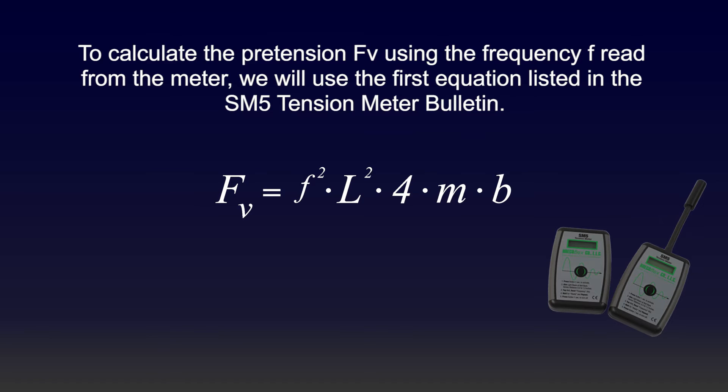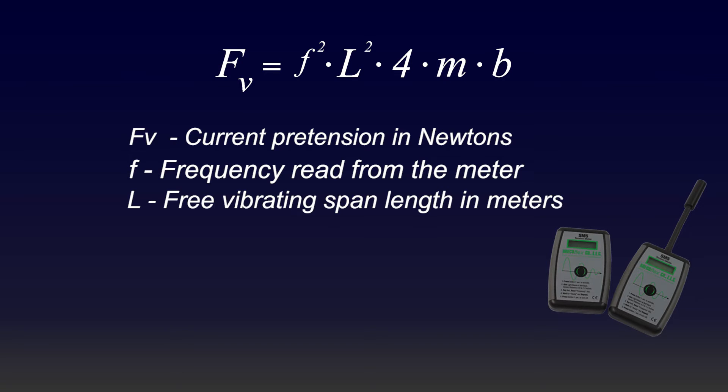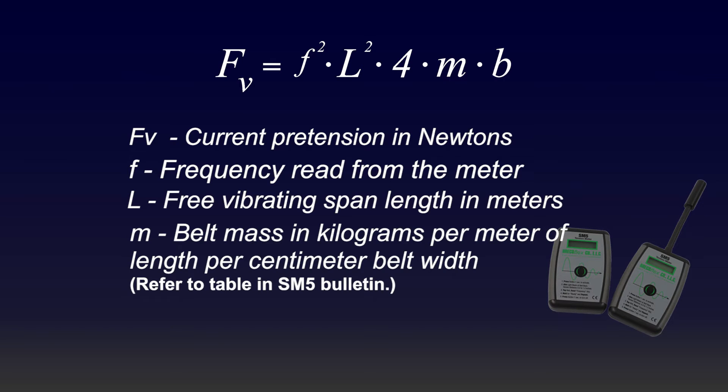This equation Fv equals f squared times L squared times 4mb. Fv in this equation is the current pretension in Newtons. f is the frequency read from the meter in Hertz. L is the free vibrating span length in meters. m is the belt mass in kilograms per meter of length per centimeter belt width. b is the belt width in centimeters.